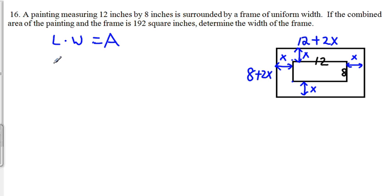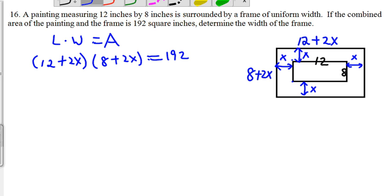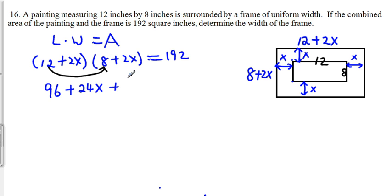Therefore, we can plug it in. Since we know the length is 12 plus 2x, the width is 8 plus 2x, and the total area is 192. Now, to solve this equation, first of all, we're going to distribute it. We are going to use FOIL to do 12 times 8, which gives us 96. Now we do 12 times 2x, that would be plus 24x. Now we do inner, 2x times 8, 16x. 2x times 2x, which is 4x squared, equal to 192.